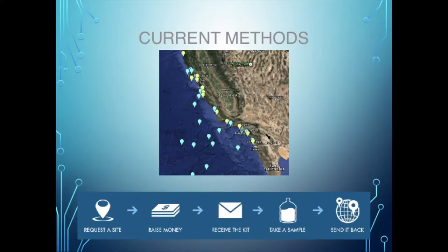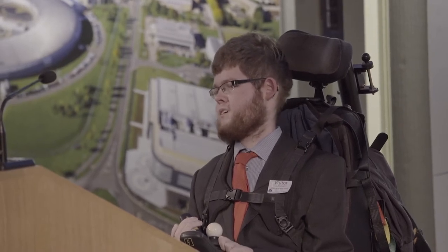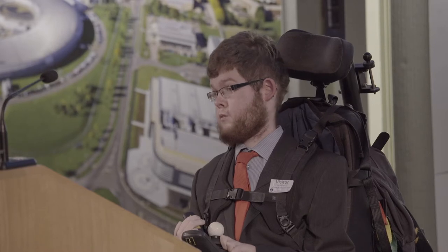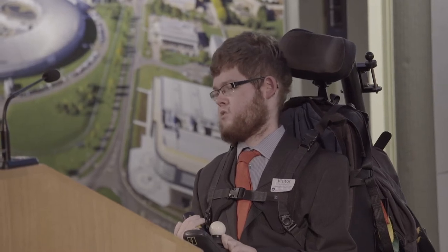We're looking at methods for measuring radiation in the water. One of the main methods is to go out, collect a sample, bring it back to the lab, and then test it. This will take a week or maybe two, and that's very time consuming — you're only really getting a very limited source. Another method could be going out in a boat and using a Geiger counter to test the water, but this is also very time consuming and needs a person to operate it.